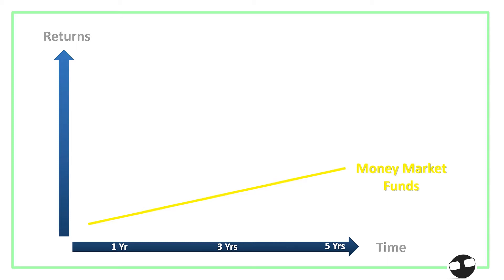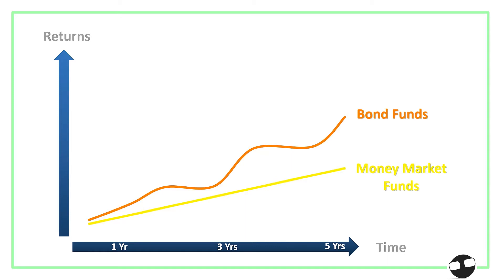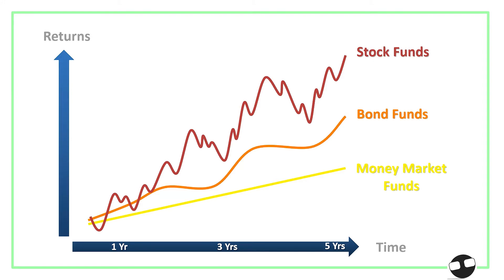For a money market fund, if you look at the one to five year time frame, it's going to be a very straight uptrend, because money market funds are very conservative and their returns are very consistent throughout the five-year time frame. For bonds, there are obvious curves within the five-year time frame, but the fifth-year value is higher than the initial year's price. For stock investments over a five-year time frame, the volatility is very obvious — you have multiple dips and peaks, uptrend and downtrend throughout.